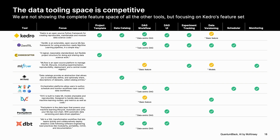Kedro is often compared with DVC as well, a tool that started around versioning datasets but then later on gained pipeline support as well. Kedro is a little bit more comprehensive and offers a project template that allows you to structure your projects in a very clear way as well as some additional features.